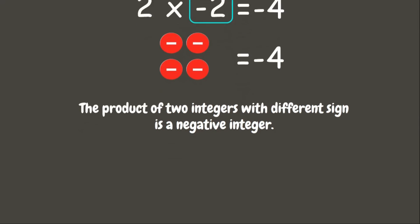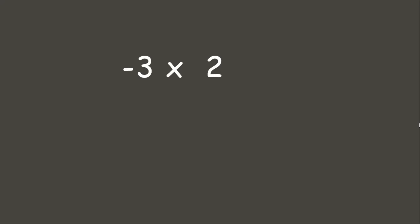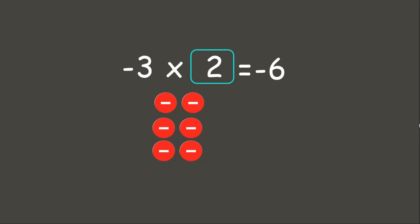Let's try another example. We have here negative 3 times positive 2. As we learned earlier, if we are multiplying two integers with different signs, the answer would be negative. So, negative 3 times positive 2 is negative 6. Let's check using our counters. Our multiplicand is negative 3, so let us put three negatives. We need to multiply it to 2, so we need to make two groups of three negatives. Since our multiplier is already a positive integer, there is no need to flip the counters. Therefore, our answer is six negatives.